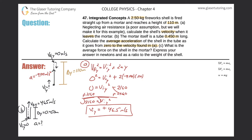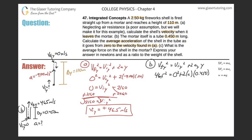We use the same equation as Part A. Final velocity in the y-direction squared equals initial velocity in the y-direction squared plus two times acceleration in y times displacement in y. The final velocity is 46.5, squared. The initial velocity was zero. Two times the acceleration — which is what we're looking for — times the displacement of 0.450 meters. Squaring 46.5 and considering significant figures gives 2160.